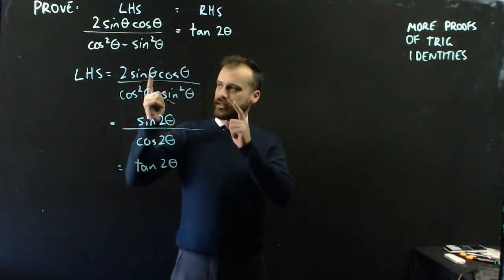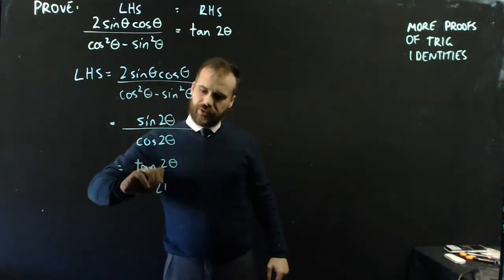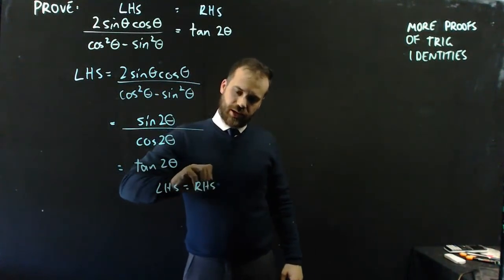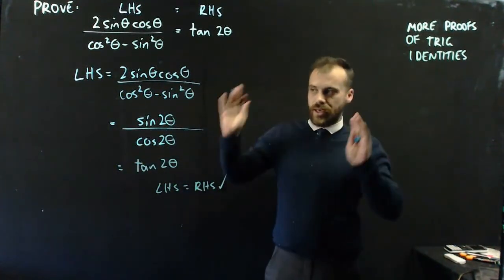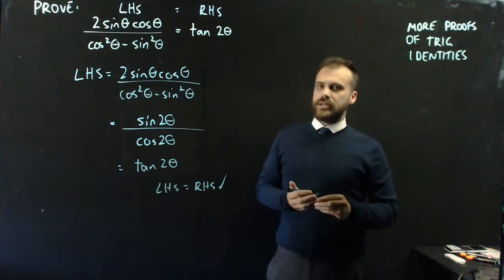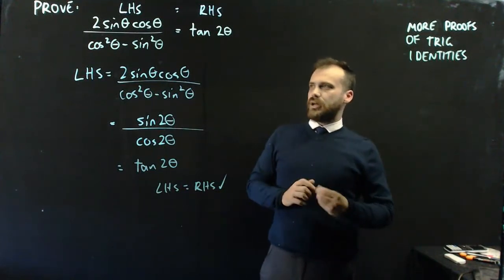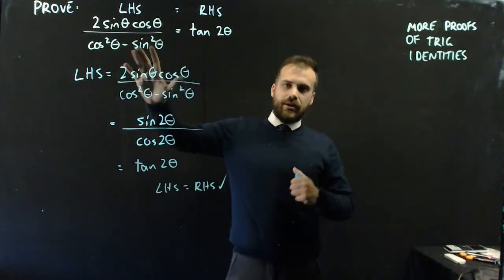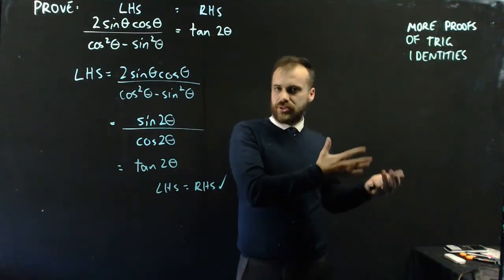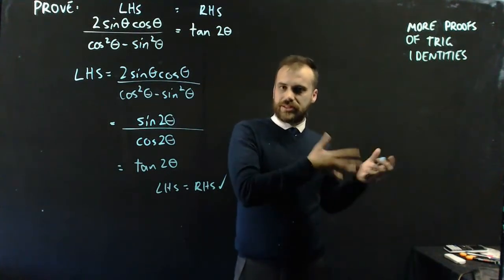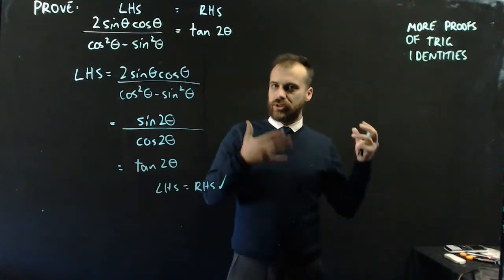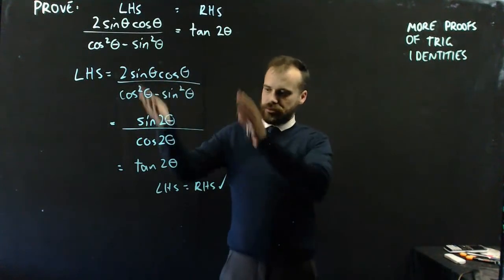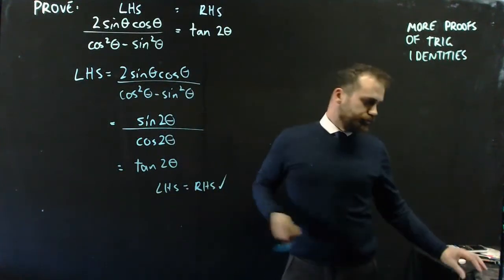That means that the left-hand side equals the right-hand side — tick, proven, happy days. It looks really complicated, but I've got two double angle identities sitting on my formula sheet. I refer to them, I look for them, I find them, I substitute them, and prove them.